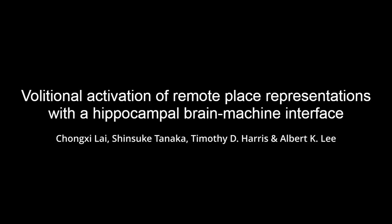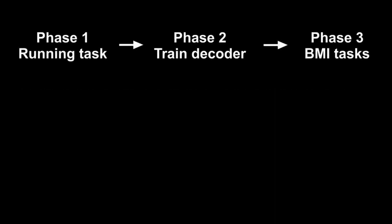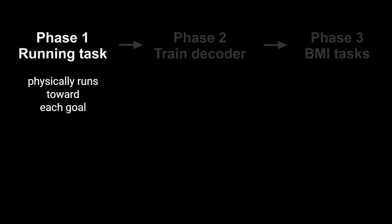We developed a brain-machine interface to test if rats can control their hippocampal activity. Our BMI experiments consist of three phases. In phase one, the animal physically runs toward each goal while its hippocampal activity is recorded.